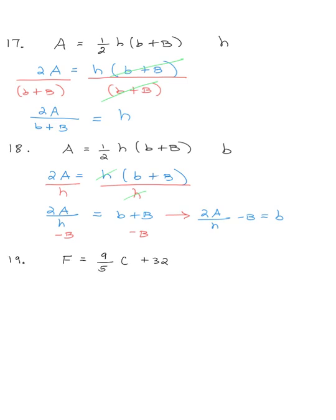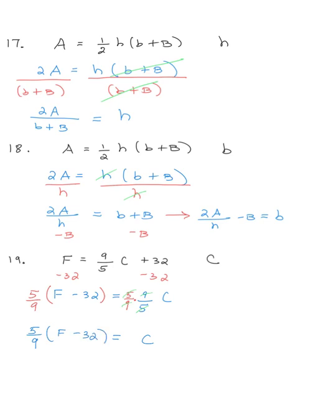To solve the Fahrenheit-to-Celsius conversion formula for capital C, I subtract 32 from both sides: F minus 32 equals nine-fifths times C. In one step, I can get rid of this 9 and this 5 by multiplying both sides by the reciprocal, five-ninths, being careful to put parentheses around the entire left side. The 5s and 9s cancel on the right, so C equals five-ninths times quantity F minus 32. You could distribute this into the expression if you'd like, but this is a fine way to write the answer.